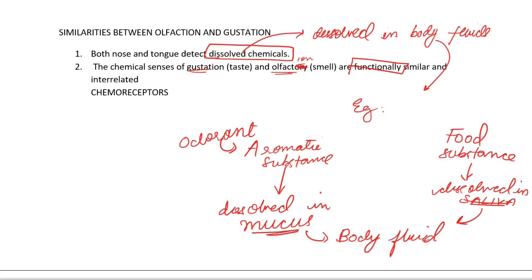The chemical senses of gustation and olfaction are functionally similar and interrelated because both the nose and tongue have chemoreceptors. You can observe this in daily life — when you have a blocked nose, the same food tastes different compared to when you are healthy. When your nose is blocked and olfaction is reduced, you can notice this difference very clearly. This is why we say gustation and olfaction are functionally interrelated.